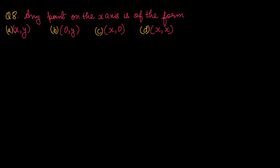Question number 8: any point on the x-axis is of the form? x-axis के उपर जब point होएगा, तो उसका ordinate 0 होएगा, सिर्फ abscissa exist करेगा। तो वो point बन जाएगा (x, 0)। Option number C is the right one.